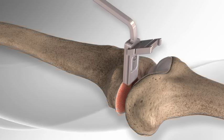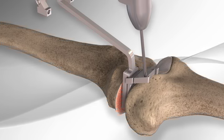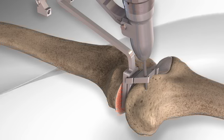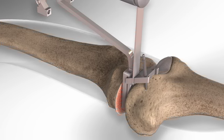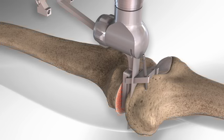Once the gaps have been determined with the spacer blocks, specialized linked cutting guides are secured to the femur to remove only the diseased portion of the bone to prepare the femur prior to sizing the implant.